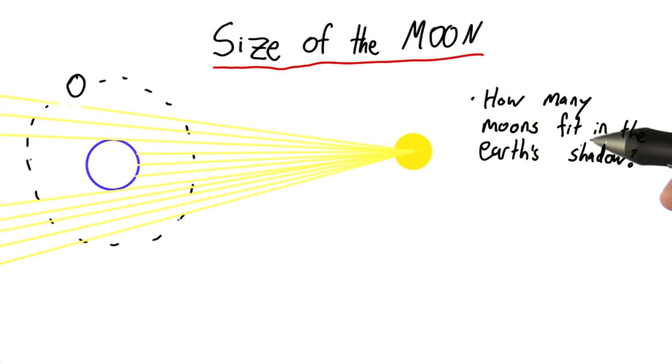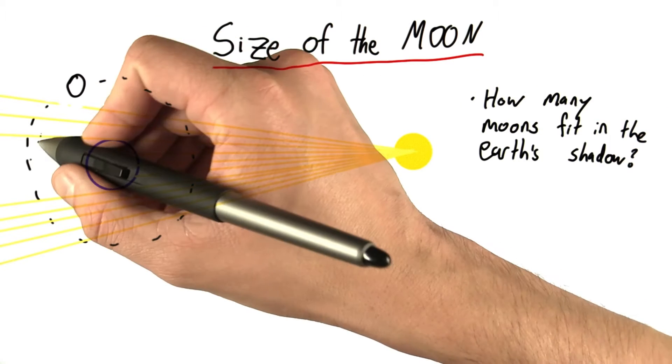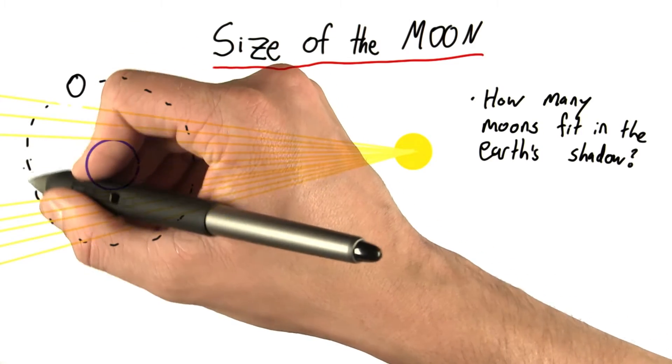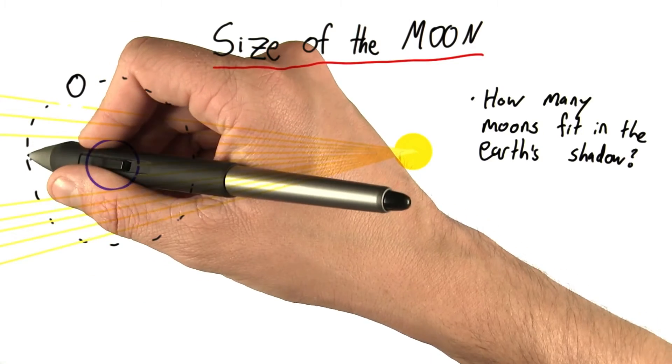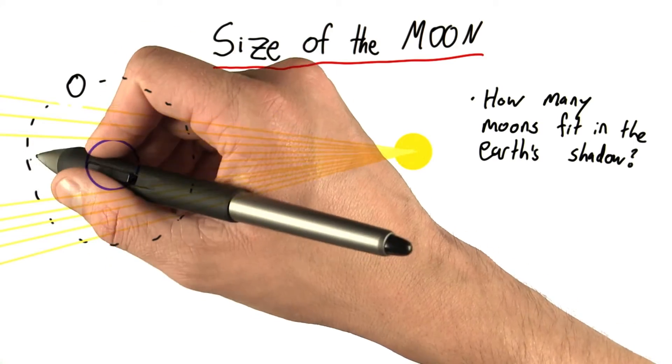So how are we going to answer this question? How many moons fit in the earth's shadow? All we're going to do is time how long the moon spends in the earth's shadow, how long we can't see it for, during a total lunar eclipse.